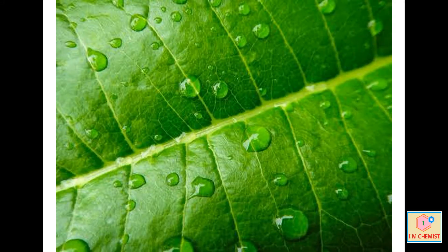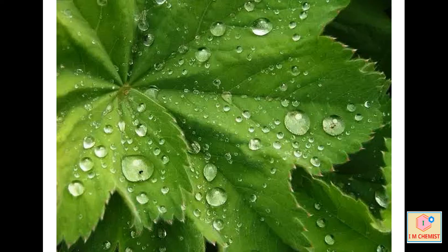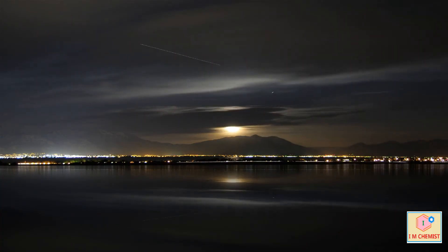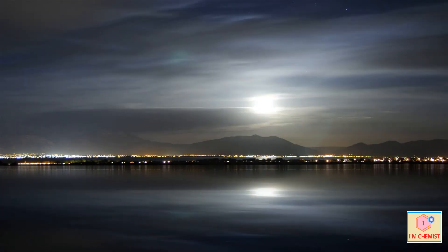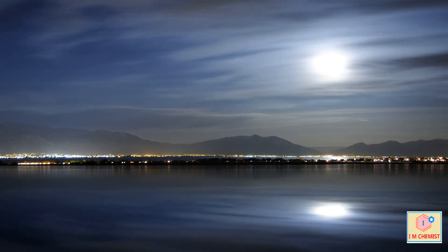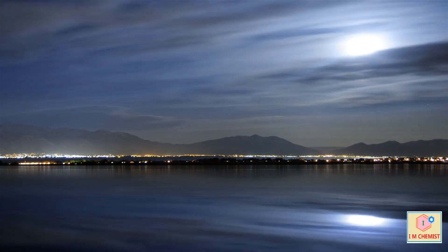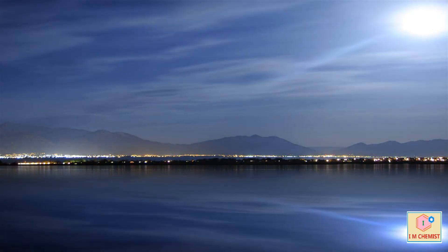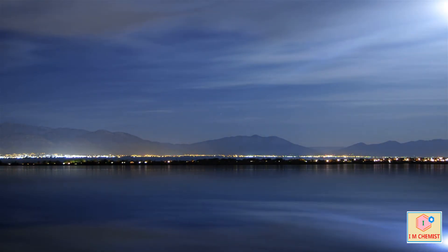It tends to collect in places that are themselves cool, such as leaves or spider webs, which are thin and radiate off their daily heat. As the sun comes up, the dew evaporates again, so the dew only lasts till the morning. This was all about dew drops and how the formation of dew droplets takes place. Thanks for watching.